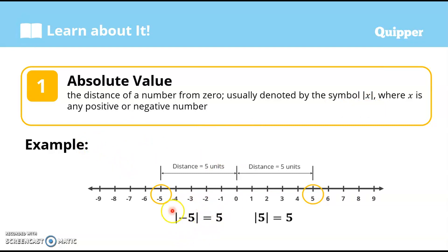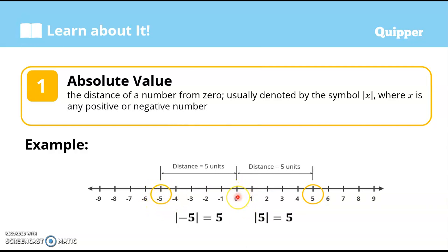For example, this is read as the absolute value of negative 5. When we say the absolute value of negative 5, it refers to the distance of the number negative 5 from zero. So we have zero here and this is the number negative 5. Counting the distance: 1, 2, 3, 4, 5 — negative 5 is 5 units from zero. Therefore, the absolute value of negative 5 is 5.